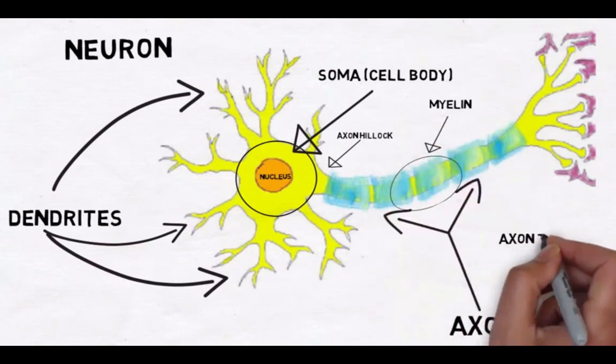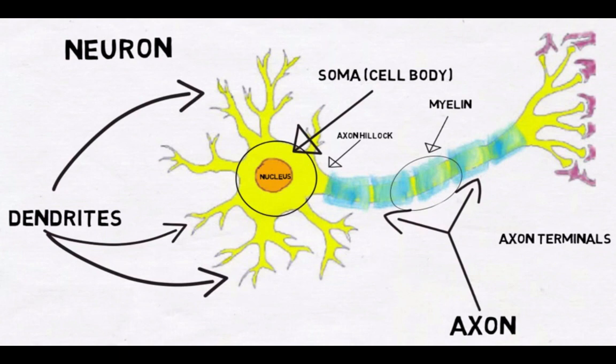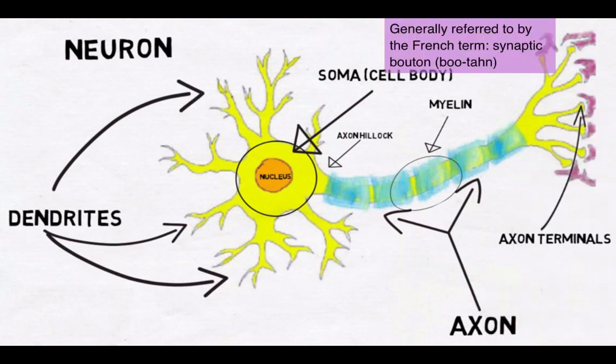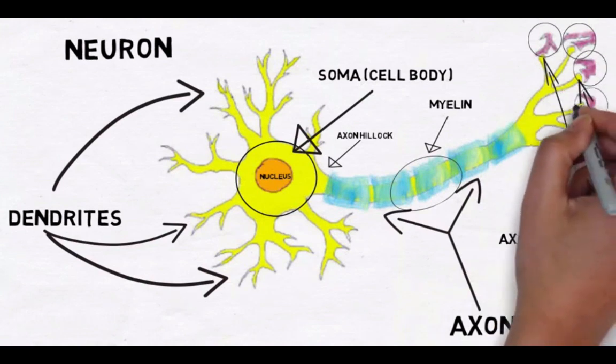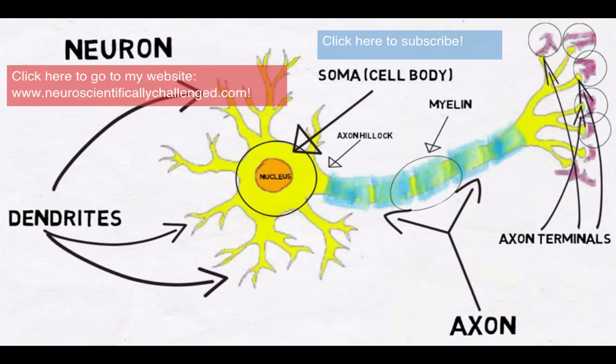The last step for the action potential is the axon terminals, also known as synaptic buttons. When the signal reaches the axon terminals, it can cause the release of neurotransmitter. These purple structures represent the dendrites of another neuron. When a neurotransmitter is released from axon terminals, it interacts with the receptors on the dendrites of the next neuron, and then the process repeats with the next neuron.